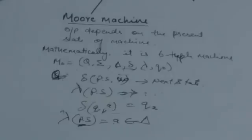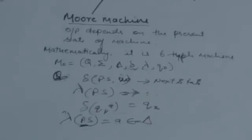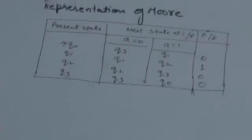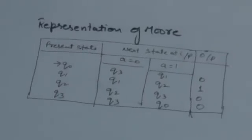Unlike DFA and NFA, the Moore machine doesn't have any final state.